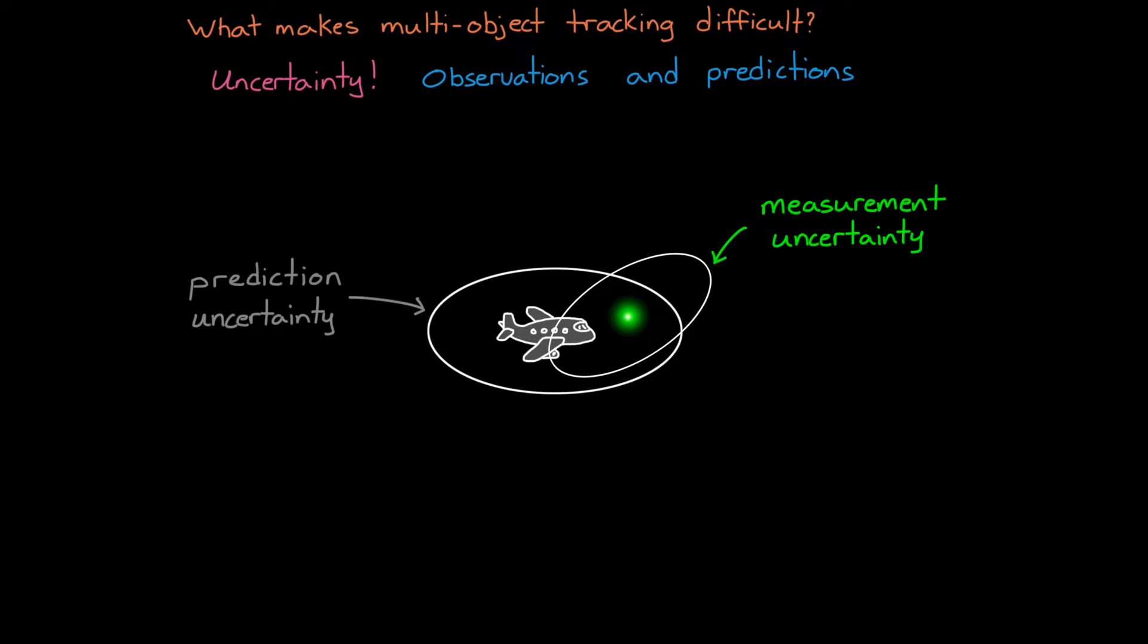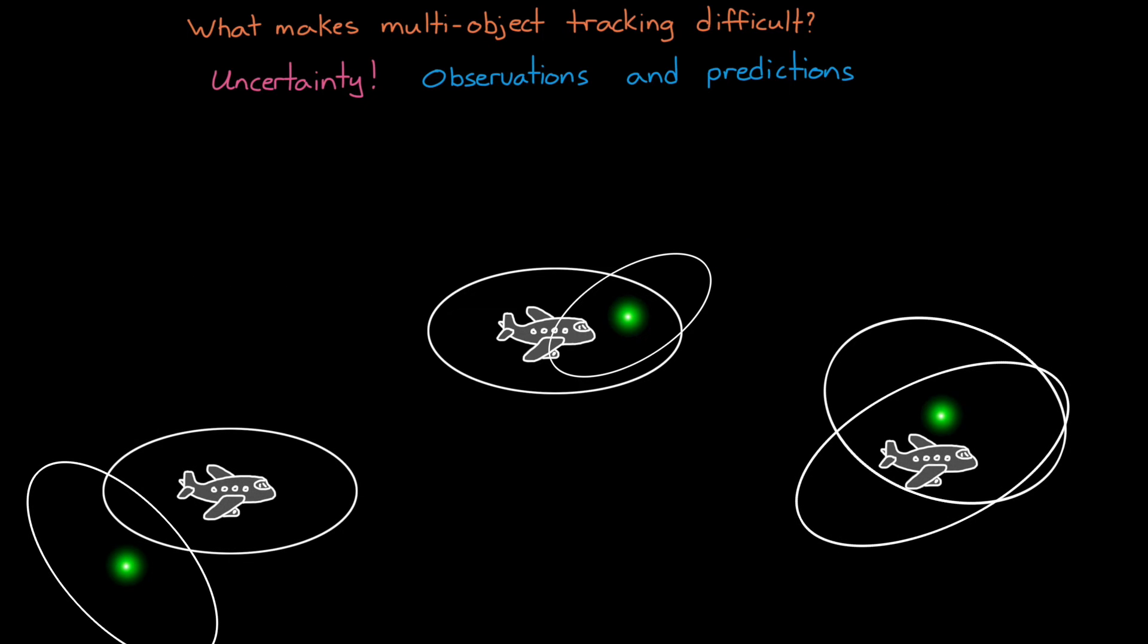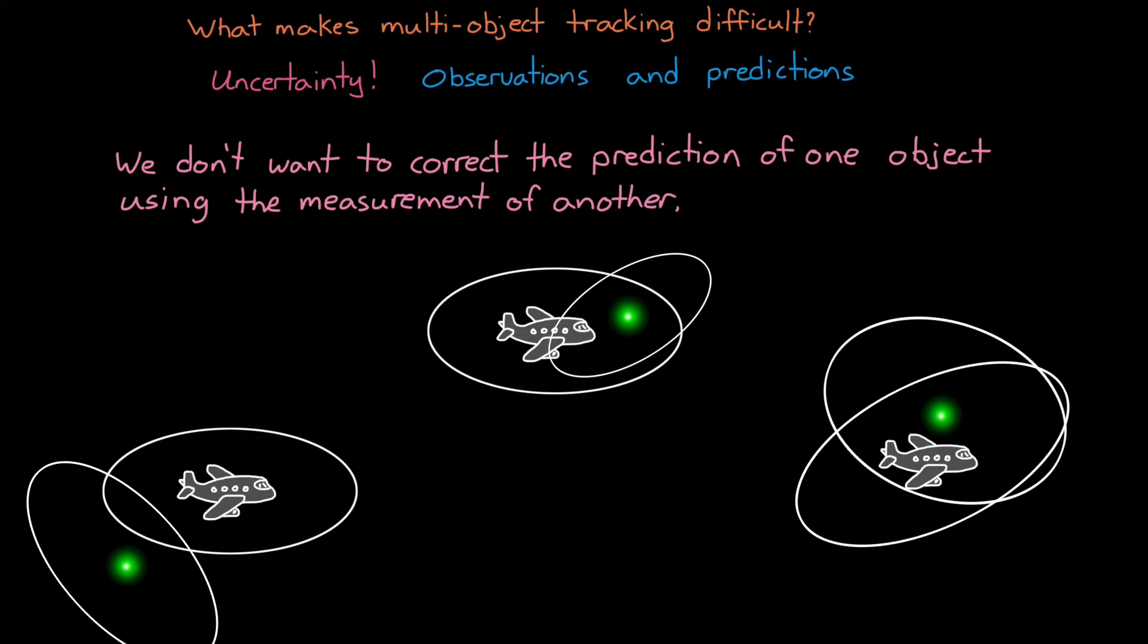But now, instead of a single object, we have lots of objects, each with their own uncertain prediction that we need to correct with its corresponding uncertain measurement. So already we come to our first problem. We don't want to correct a prediction of one object using the measurement of another.